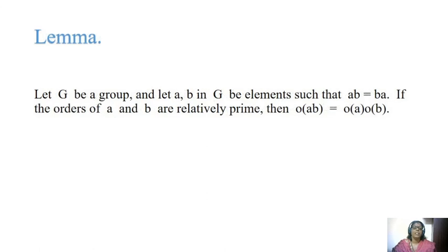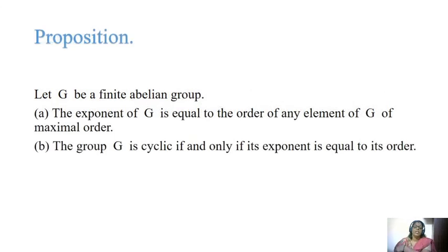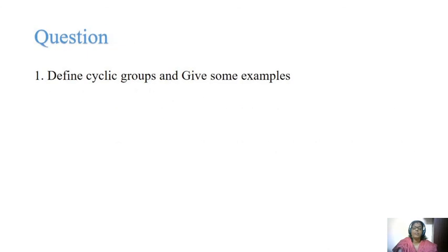Next lemma: let G be a group and A, B belong to G such that AB equals BA (commutative property). If the orders of A and B are relatively prime, then order of AB equals order of A times order of B. Next proposition: let G be a finite abelian group. The exponent of G equals the order of any element of G of maximal order. The group G is cyclic if and only if its exponent equals its order.